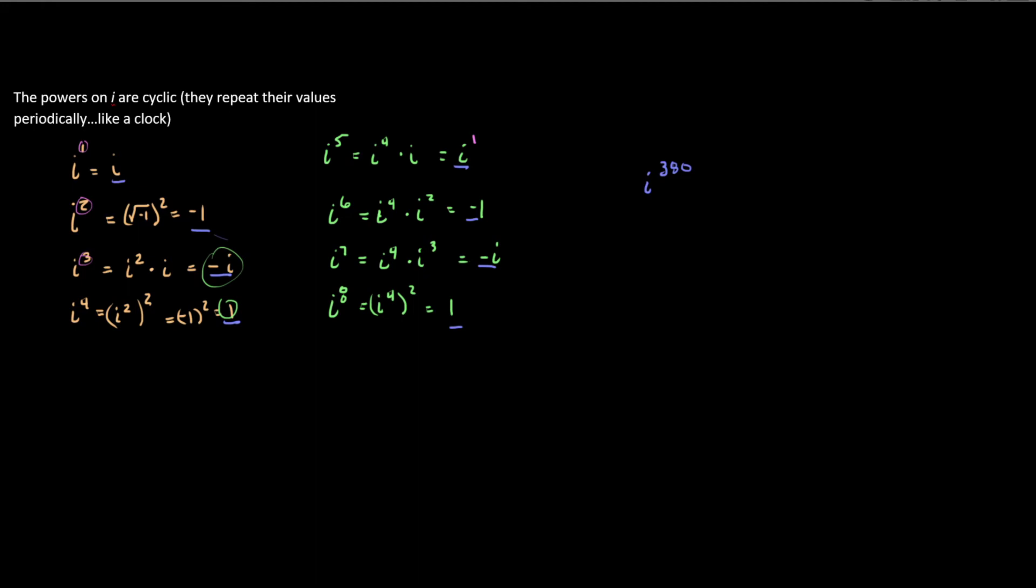Huh. All right. I wonder what 380 divided by 4 is. And the funny thing is, we don't need to know. We actually just need to know, is there a remainder? And if there is, what is it? So we can look at this and say, our divisibility rules tell us that if we want to know if it's divisible by 4, we take a look at the last two digits and say, is 80 itself divisible by 4? And the answer is yes. Which means that there's no remainder. So this is going to look like i to the 4th, which is just 1.